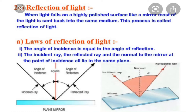You have studied laws of reflection in lower classes. Let us recall those laws. First, the angle of incidence is equal to the angle of reflection. The angle made by the incident ray with the normal is called the angle of incidence, and the angle made by the reflected ray with the normal is called the angle of reflection. The second law is that the incident ray, the reflected ray, and the normal to the mirror at the point of incidence all lie in the same plane. You can be asked in a two-mark question to define reflection of light and state the laws of reflection.